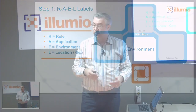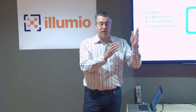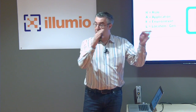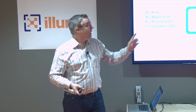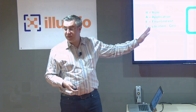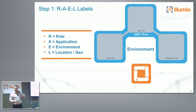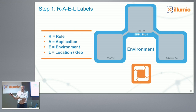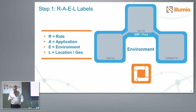This is an ERP example. Let's say you're developing a new ERP application — you start it in development, build a policy model, and label it accordingly. Then you move it into test and into production. That security model can actually follow the software development cycle through the deployment process.